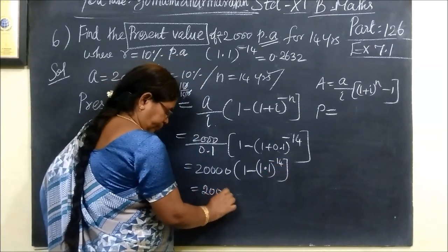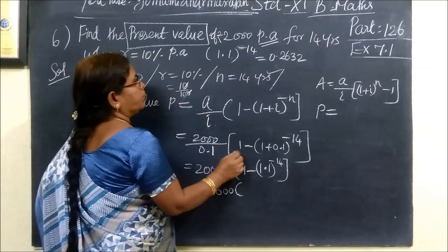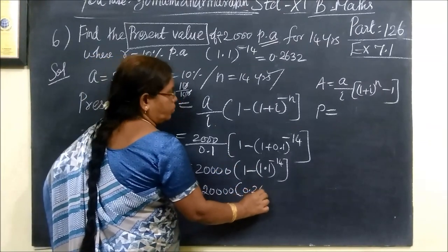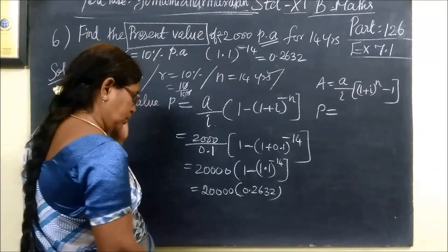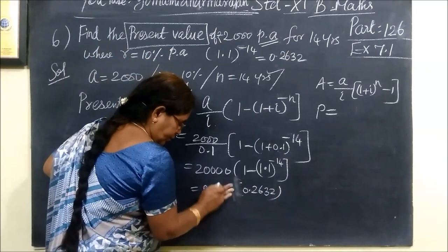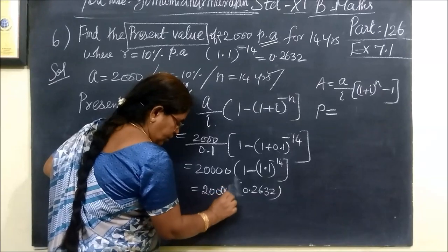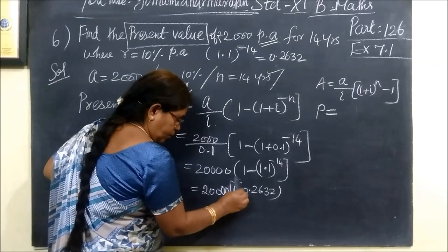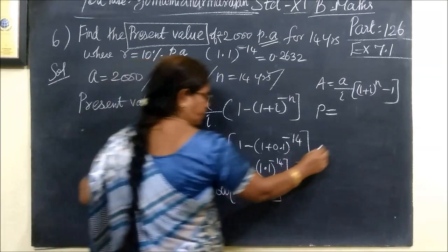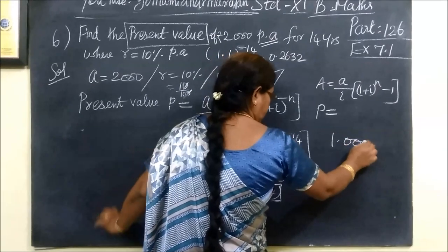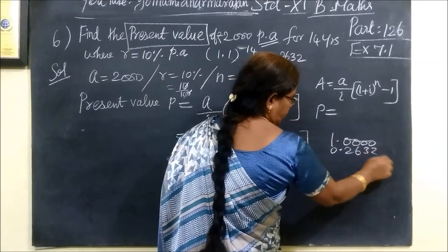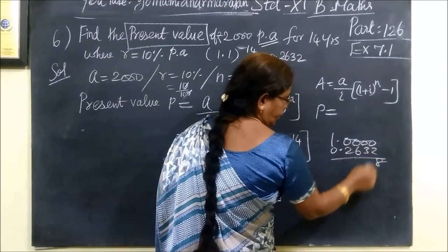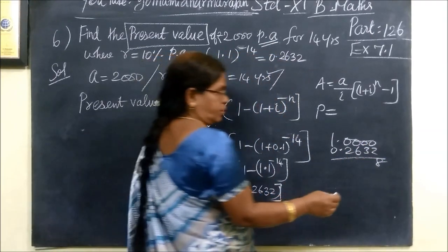This is equal to 0.2632. This is 1 minus, so 9 minus 3 is 6, 9 minus 6 is 3, 9 minus 2 is 7.